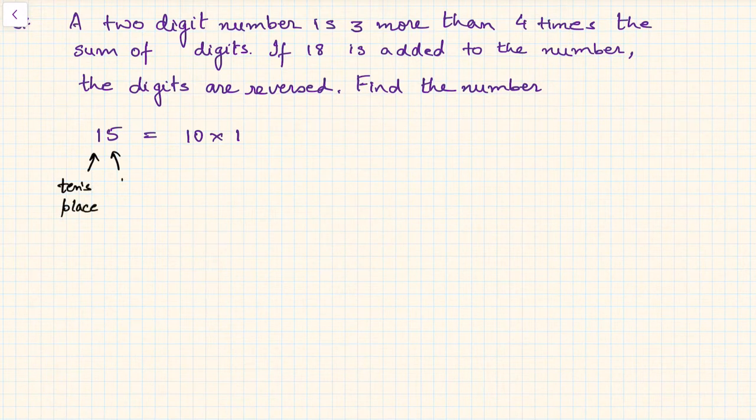And this one is units place. So the number value is nothing but 10 into 1, that is the tens place digit, plus 5. Now many questions will be there where the numbers will be reversed. So if you see, if the digits are reversed, you will get 51.